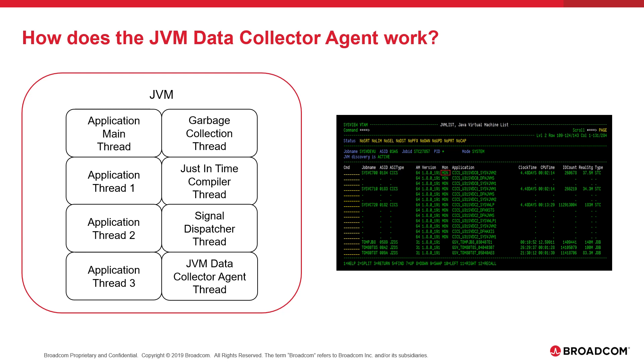While on the JVM List command, the user can verify that the JVM Data Collector Agent is active from the MON column. MON, short for Monitor, indicates if a JVM Data Collector Agent is active in the JVM. The column will display MON when the Agent is active and will be blank when the Agent is not active.